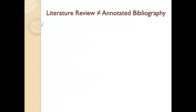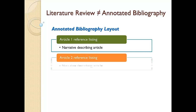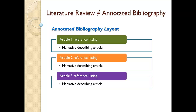I want to conclude this lesson by mentioning a mistake I see quite often. A literature review is not an annotated bibliography — these are two entirely different ways of presenting existing information on a topic. Unlike a literature review where we divide our material by themes, an annotated bibliography reviews each article individually. The full reference listing for each article is provided, followed by a description of the article in an annotated bibliography.